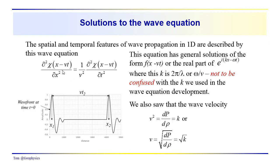Last time we developed the wave equation, which relates the second spatial derivative of particle displacements to the second temporal derivative of particle displacements, represented by the symbol chi. We have d²χ/dx² = 1/v² · d²χ/dt². This is our one-dimensional wave equation, so we aren't taking into consideration spherical divergence or the shape of the wave front — we're assuming that it's planar, ignoring spherical divergence and absorption along the path of wave propagation.